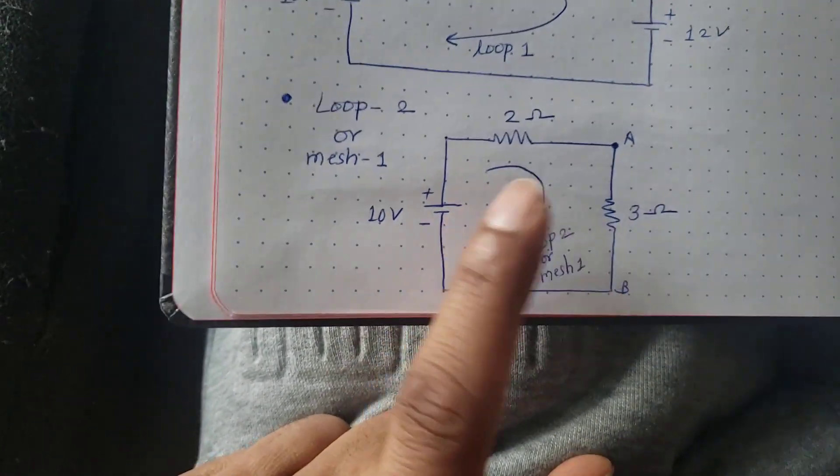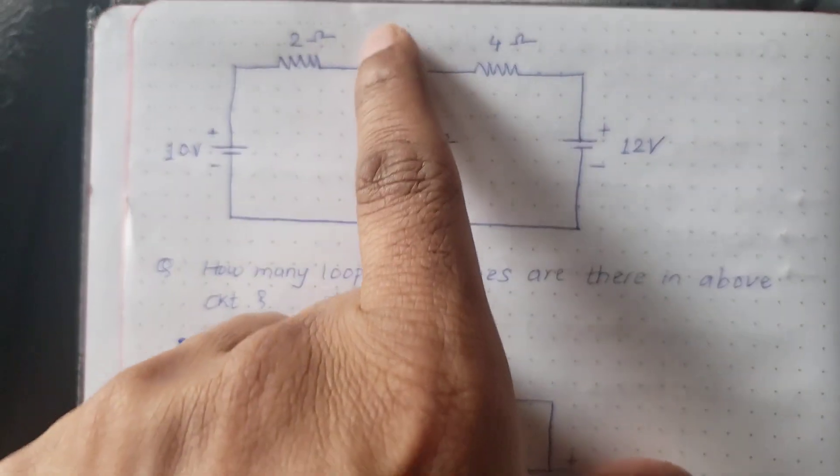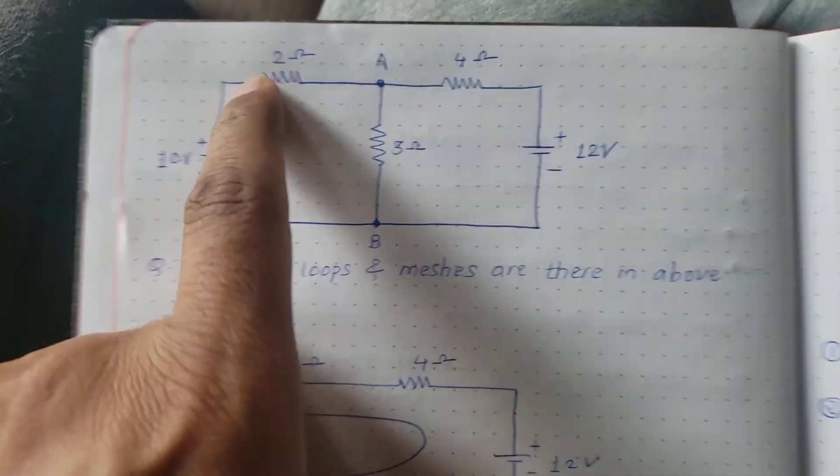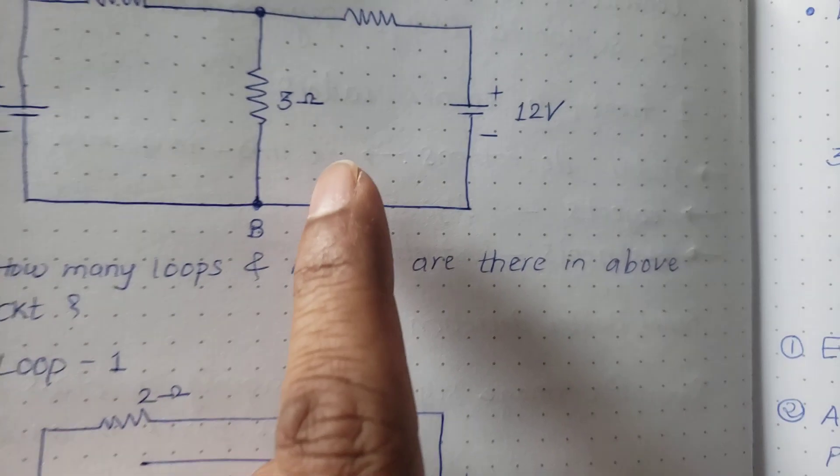This is loop also and mesh also. Similarly I'm considering the right hand side portion of it. I'm not considering two ohm resistance and 10 volt battery here. This is again a mesh because there is no any other inside loop in this.